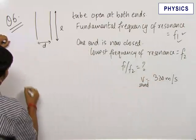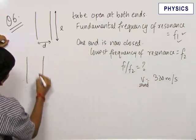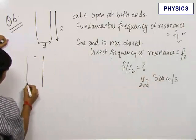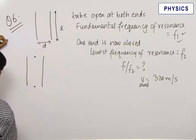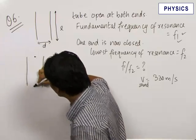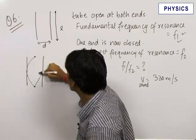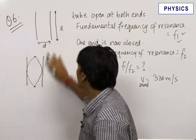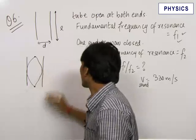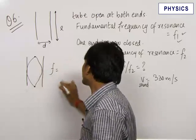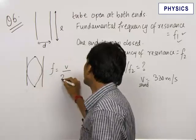Let us first write the expression for F1. When the tube is open at both ends, this acts as a pressure node. This is also a pressure node—the points at which the pressure does not change. For the minimum frequency of vibration, we have standing waves like this. Therefore, we write frequency is equal to V upon 2L.